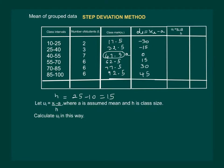Let UI denote (Xi minus A) divided by H, where A is the assumed mean and H is the class size. Now calculate UI. We have UI equal to (Xi minus A) divided by H, which is the same as Di divided by H. So let us calculate UI.